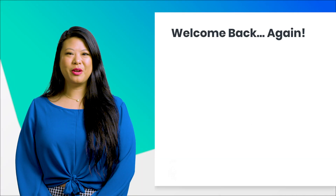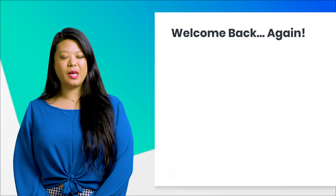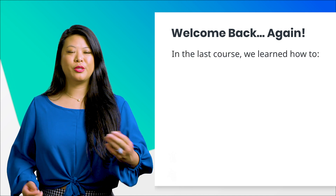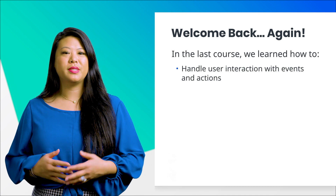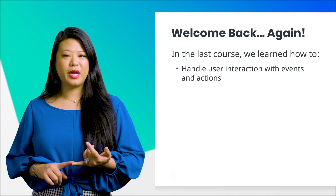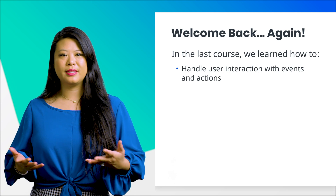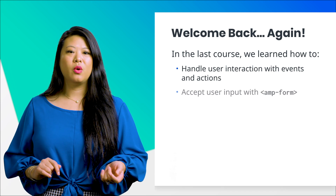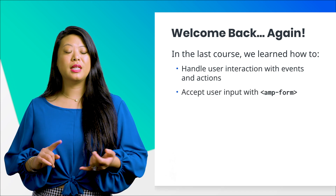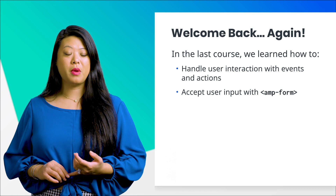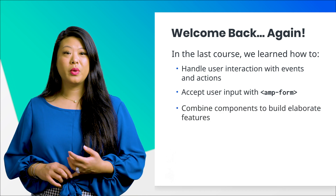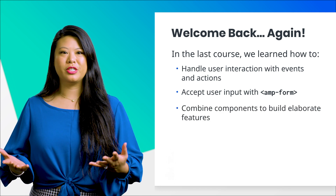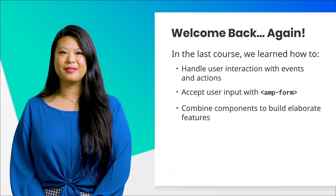In the beginner course, we learned how to create a basic AMP site using components. In the intermediate course, we learned how to use AMP to handle user interactions, such as clicks and key presses with event handlers and actions. We also learned how to collect information from our users using the AMP form, and how to build more elaborate features by combining multiple components.